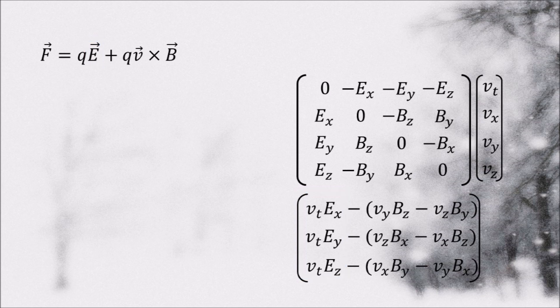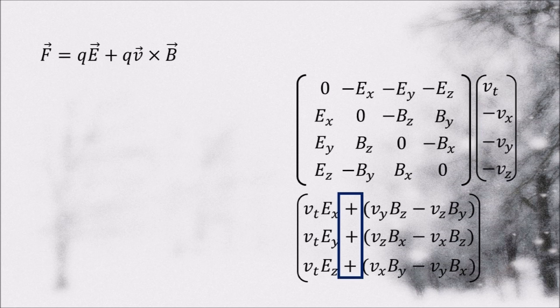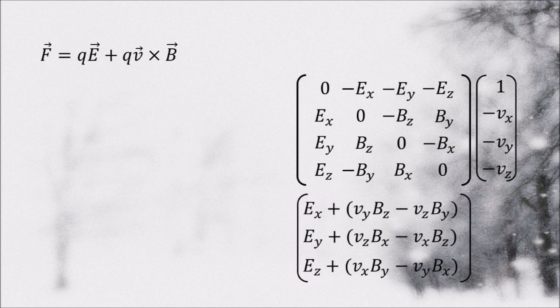So how can we fix this problem? Well, changing the sign of these components to minus would definitely do it. And while we're making ad hoc changes, why not demand that this term be one? And since we're making stuff up, let's multiply everything by the relativistic factor gamma.